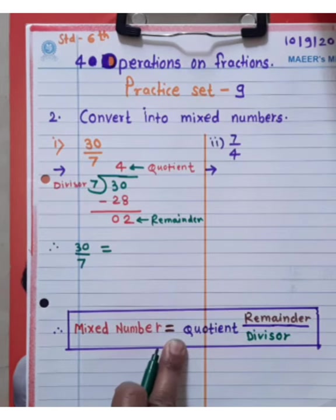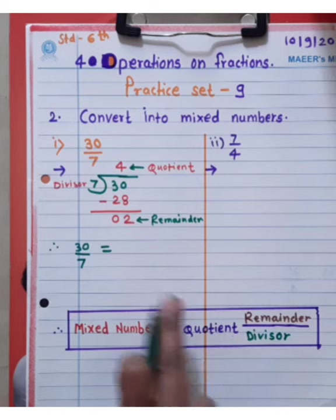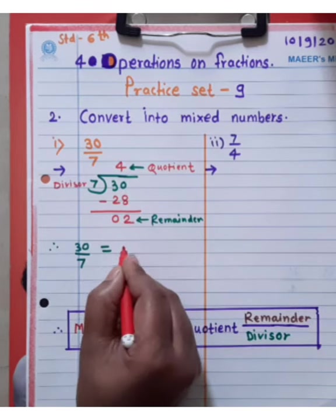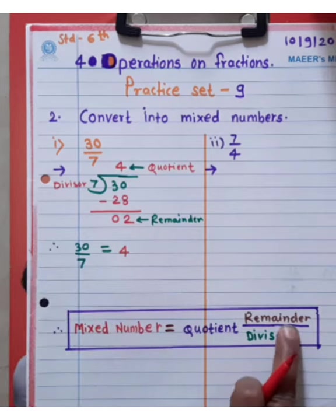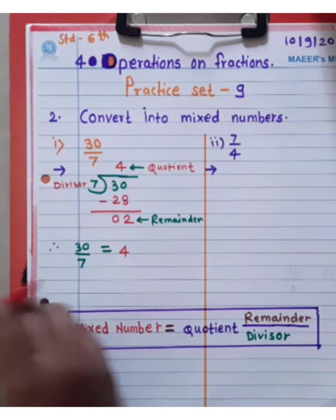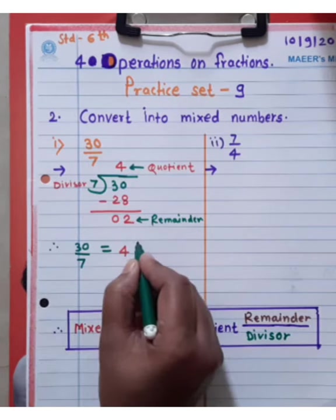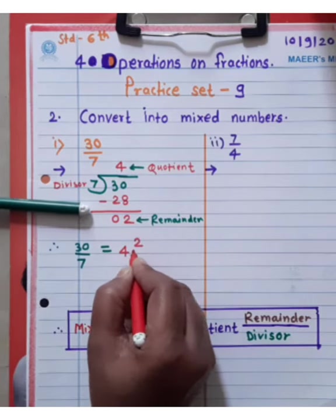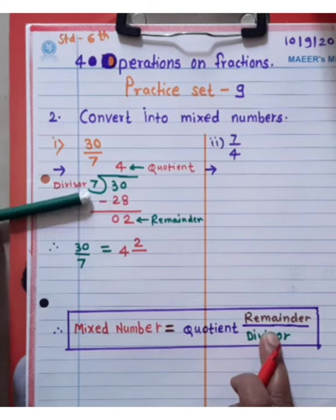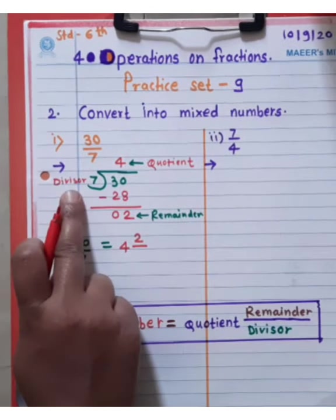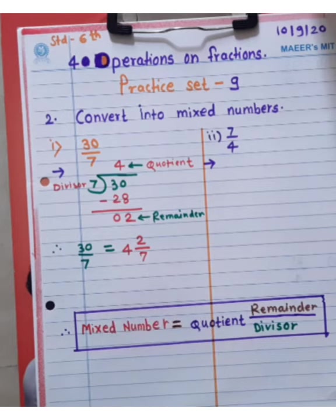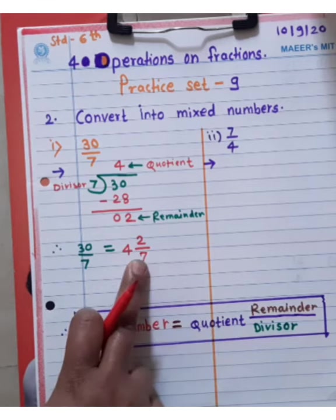Mixed number is equal to quotient, remainder divided by divisor. The quotient is 4, so write down here 4. Then remainder 2. Then divided by divisor which is 7. So here write down 7.